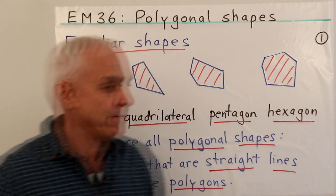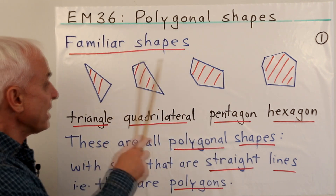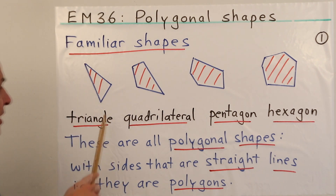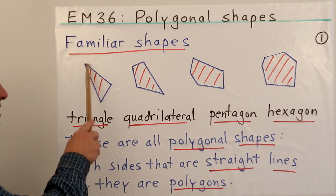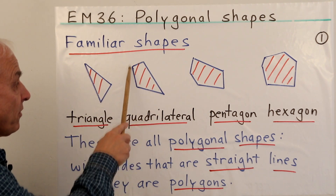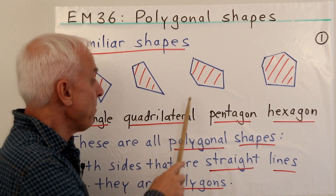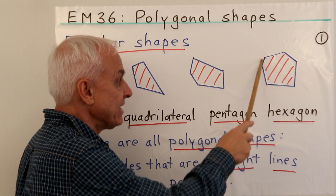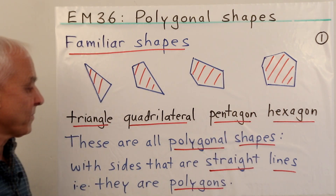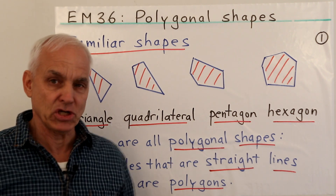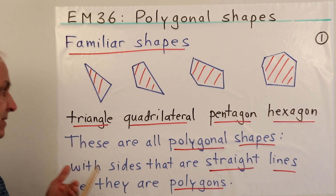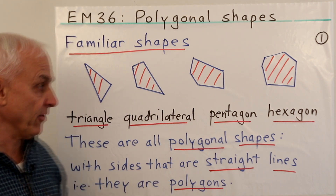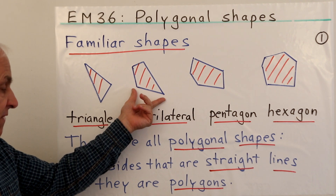Today we're going to be looking at some familiar shapes just made up from some line segments. Here is a triangle with three sides, a quadrilateral with four sides, a pentagon with five sides, and a hexagon with six sides. These are all called polygonal shapes, which tells us that the sides are all straight lines or straight line segments — finite in extent.